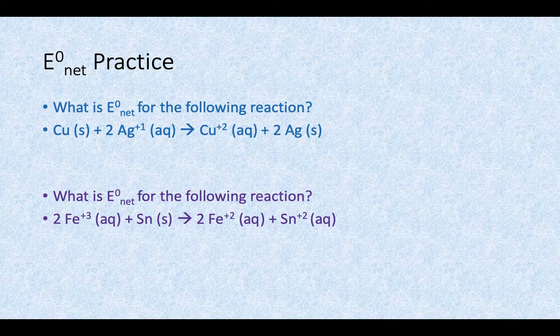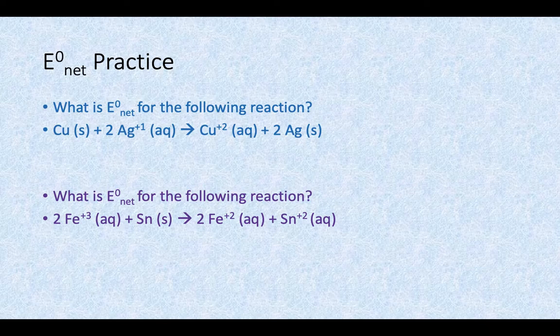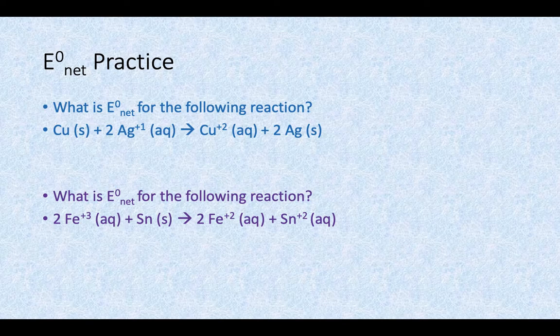When you look at the copper in this reaction, the copper starts as neutral on the left-hand side, ends as positive 2 on the right-hand side. That means it's losing electrons, it's being oxidized, that happens at the anode.